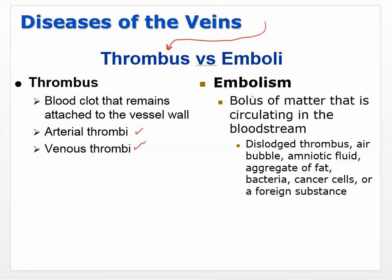We define an embolism as a bolus of matter, because it doesn't have to be a blood clot. It can be a dislodged thrombus, an air bubble, amniotic fluid, an aggregate of fat, bacteria, cancer cells, or foreign substance — really anything that ends up in your bloodstream, moves, and then blocks blood flow somewhere else. We call that an embolism.